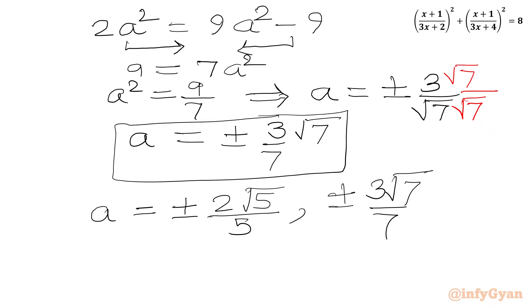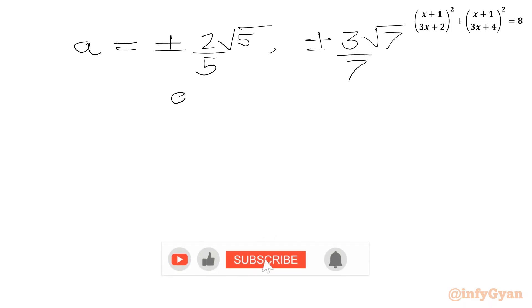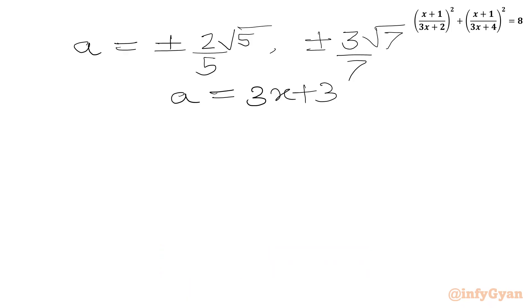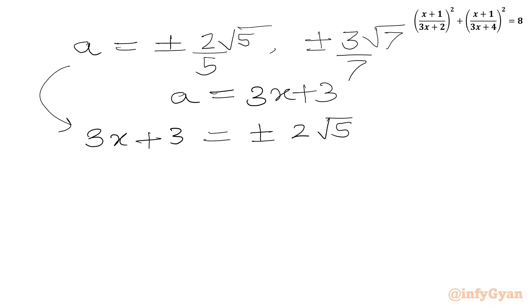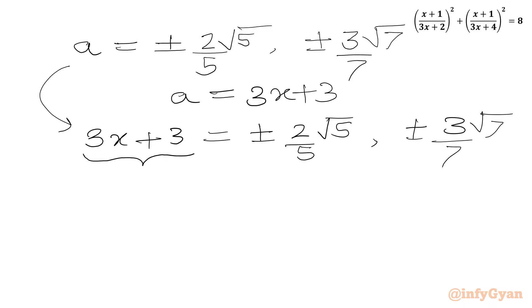Now a was our substitution: a equals 3x plus 3. So 3x plus 3 equals plus or minus 2 root 5 over 5, and plus or minus 3 root 7 over 7. We will take 3 common from the LHS, giving 3(x plus 1).